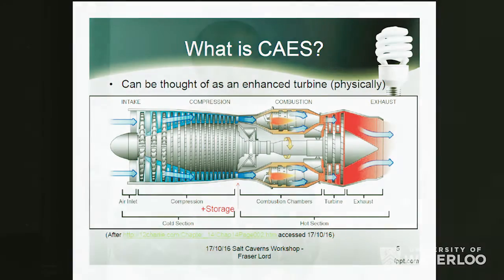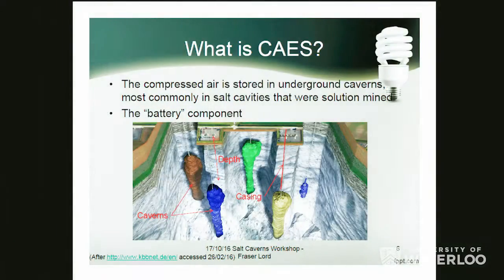For our storage component, we typically use salt caverns because it's the cheapest, which has been discussed. In this picture, you can see the ground surface cut out, and the giant white area below is a large salt dome that's kilometers deep. The colored cylinders are actually solution-mined salt caverns — that's the physical storage aspect. These caverns can be tens of thousands to millions of cubic meters large.